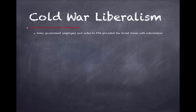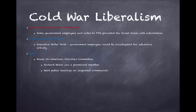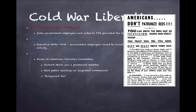Some government employees and aides to FDR provided the Soviet Union with information. Executive Order 9835 allowed government employees to be investigated for subversive activities, and HUAC — the House Un-American Activities Committee — was established. Richard Nixon was a prominent member. HUAC held public hearings on suspected communists including the Hollywood Ten, who were called before Congress and asked about their political beliefs. Alger Hiss, a former FDR aide, was convicted of perjury — sentenced to five years for lying, not for spying.